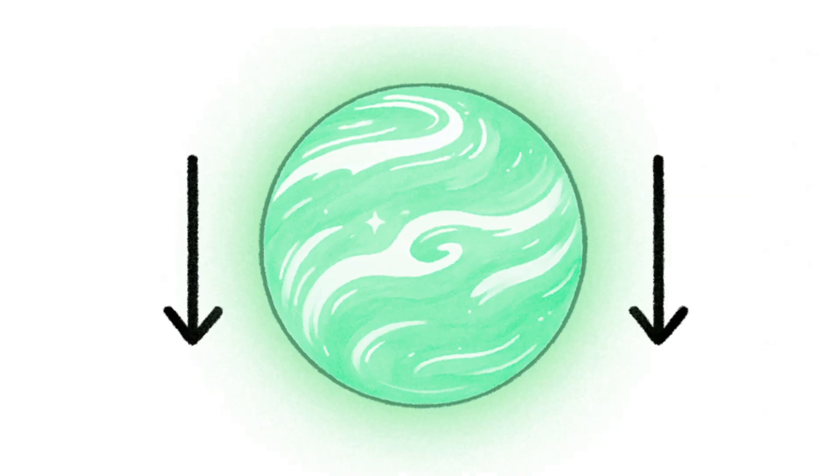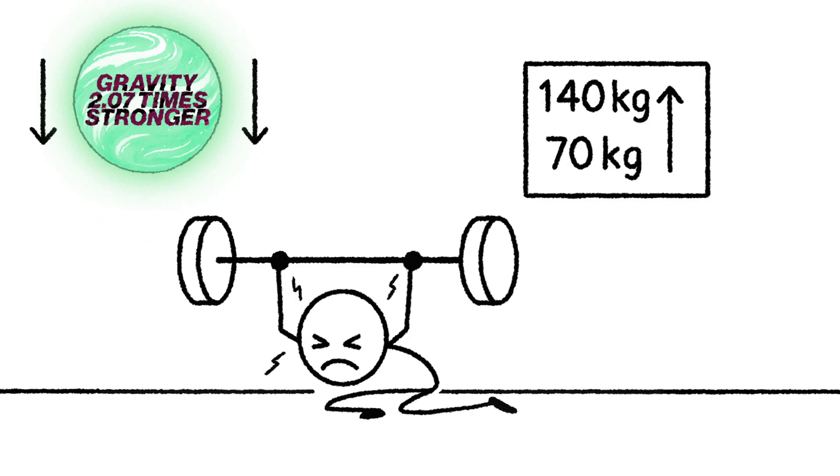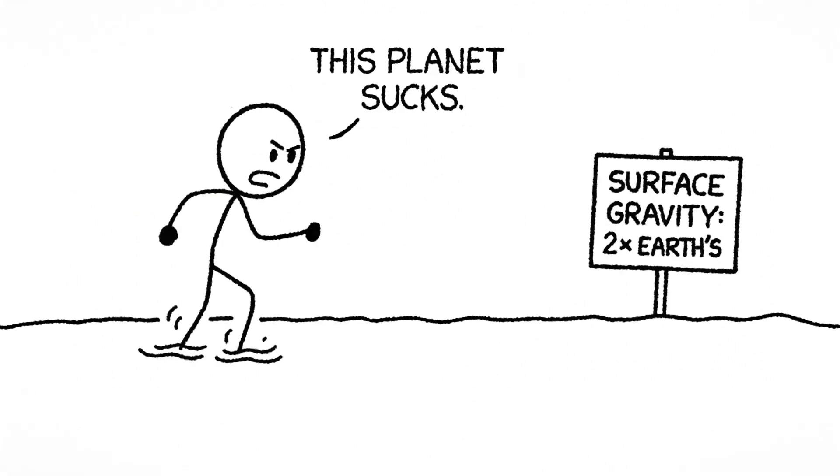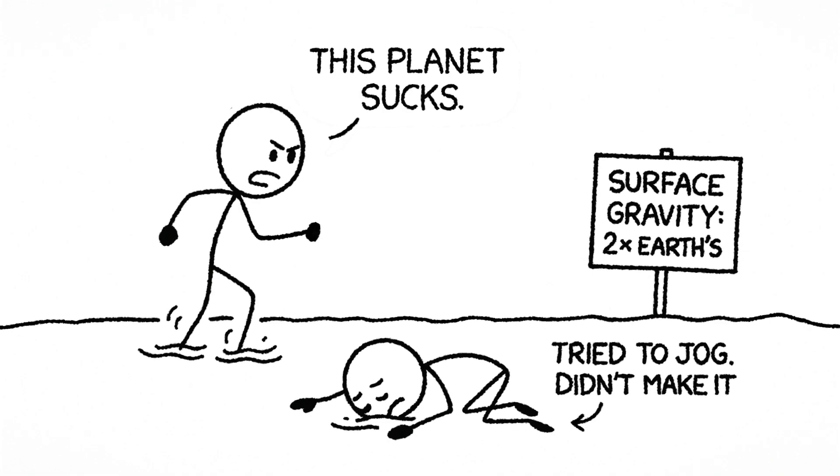That added bulk means one thing for sure: gravity. Surface gravity on Kepler-22b is likely around 2.07 times stronger than what you're used to. So if you weigh 70 kilograms on Earth, you'd weigh over 140 kilograms there. Walking around would feel like wading through wet cement. Running? Forget it. Even standing around complaining about it would leave you winded. And that's just gravity.